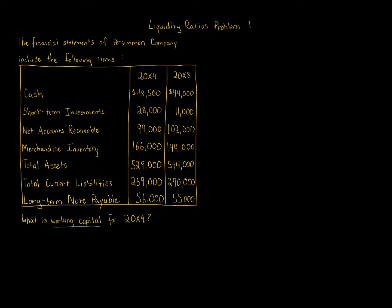Various ratios under liquidity analysis include current position ratios, accounts receivable analysis ratios, and inventory analysis. Working capital falls under current position — along with current ratio and quick ratio. The working capital calculation is simply current assets minus current liabilities. That's all we're focusing on in this specific question.